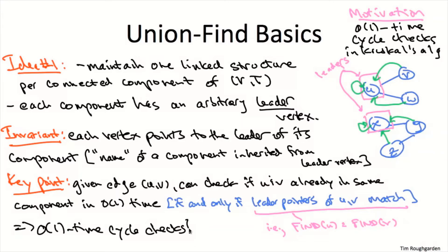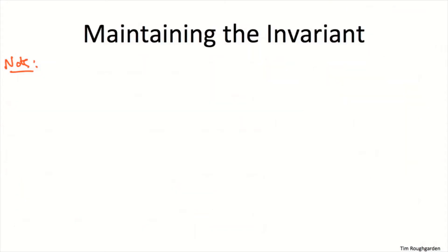Whenever you have a data structure that needs to maintain an invariant, whenever you do an operation that changes the data structure — in this case, when you do a union fusing two groups together — you have to worry whether the invariant gets destroyed. And if it does, how are you going to restore the invariant without doing undue work? We're happily doing our constant time cycle checks. Whenever an edge creates a cycle, we skip it, don't change our data structure, and move on.